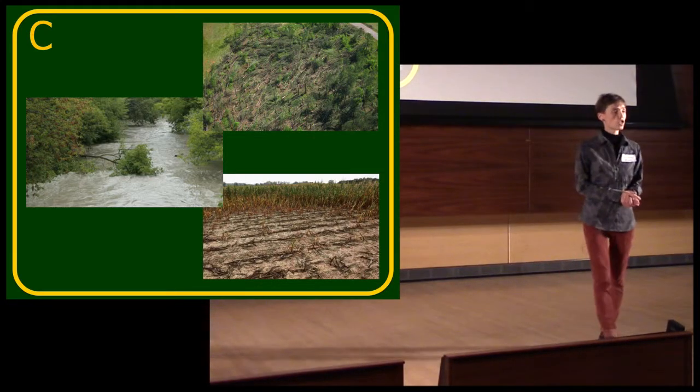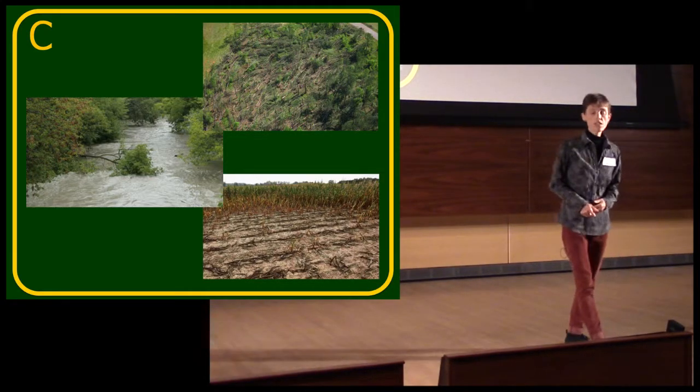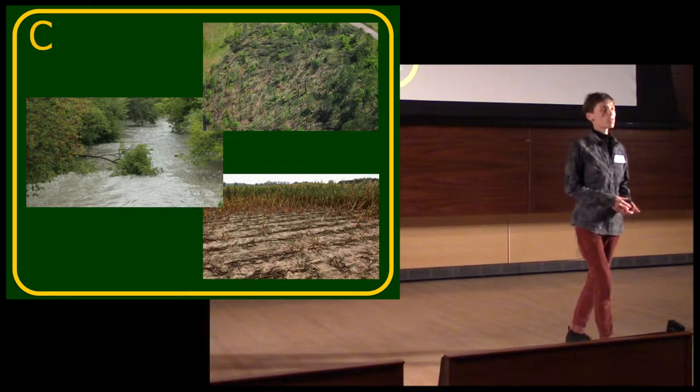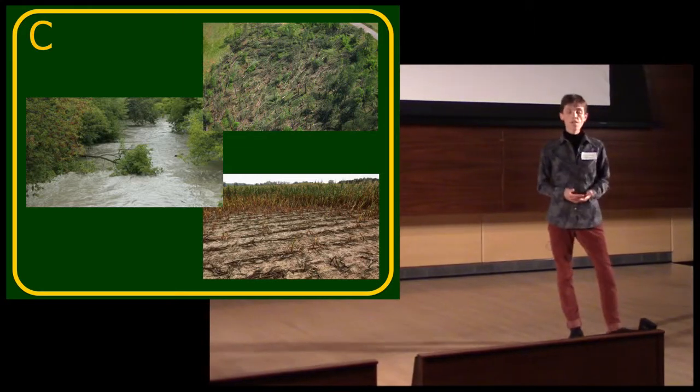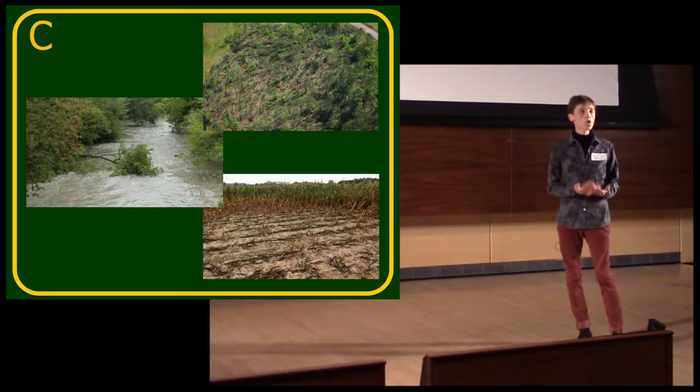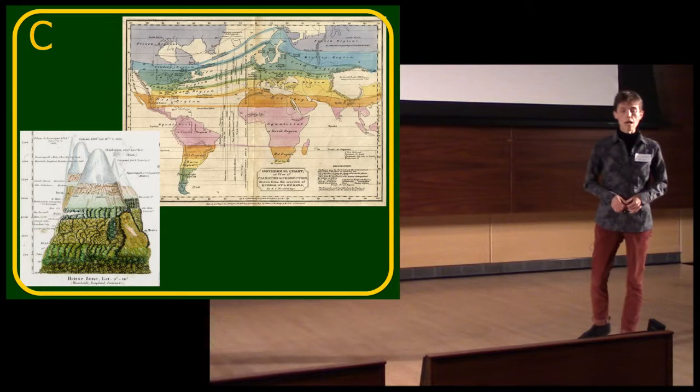So the climate's changing, and that's changing the circulation of the oceans and the atmosphere. And scientists believe that's why we're experiencing more extreme weather events. Floods, droughts, storms, all uprooting and tearing down our plants.